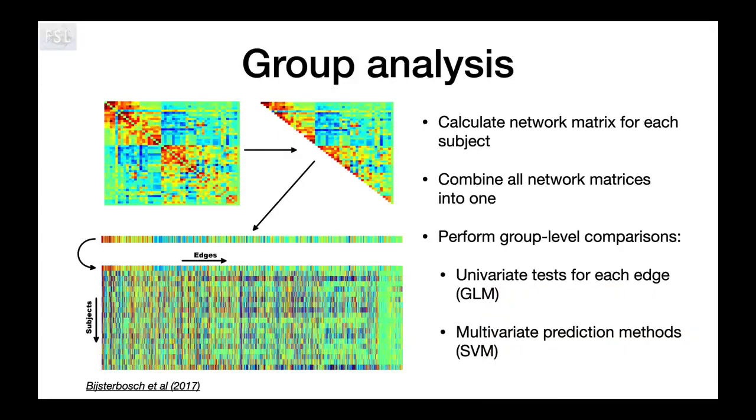Now we can use that as information to do a group level analysis. Essentially the group level analysis for this is the same as the group level analysis for all other modalities in MRI. For example, you can do a general linear model and see which edges differ between patients and controls. Or you can do a general linear model to do a regression against a continuous variable, such as intelligence or symptom score. This method is exactly the same as you do it for any brain image. But usually you fit a GLM separately for each voxel. Here you end up just fitting it separately for each edge.